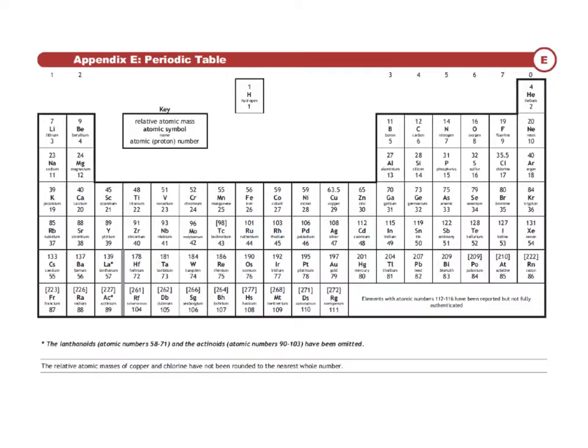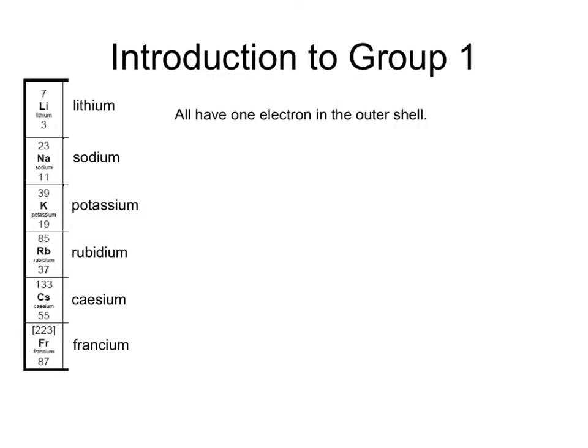Group 1 is this vertical column of elements here: lithium, sodium, potassium, rubidium, cesium and francium. They're all in group 1 because they all have one electron in their outer shell. And because they all have one electron in their outer shell, they've all got similar chemical reactions.